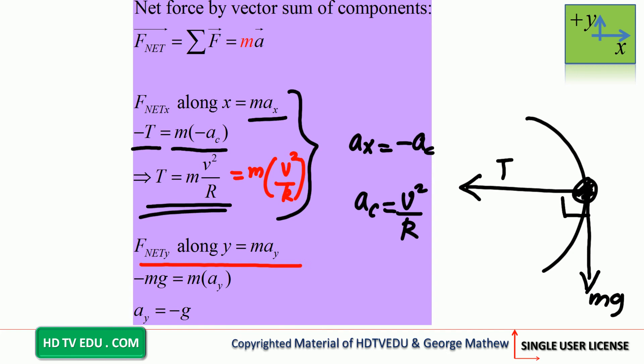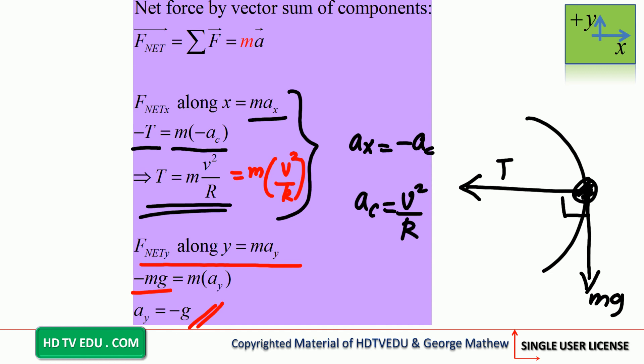The force along the vertical equals mass times acceleration along the vertical. The only force along the vertical is the gravitational force, acting down, so it is negative mg. That equals mass times acceleration along the vertical, giving acceleration along the vertical equals negative g. This is what we call the tangential acceleration. Now you know both tangential acceleration and centripetal acceleration.